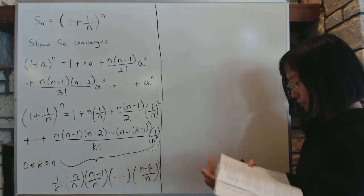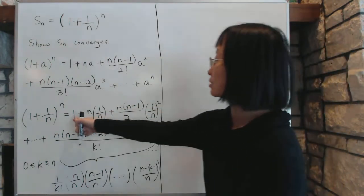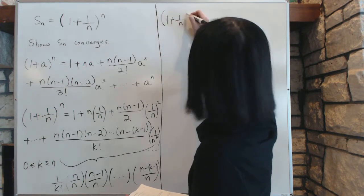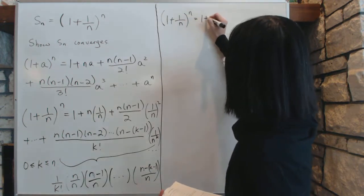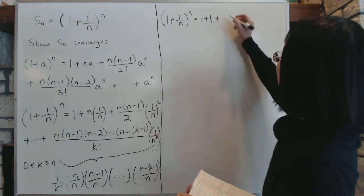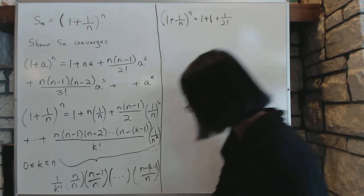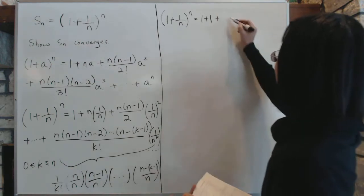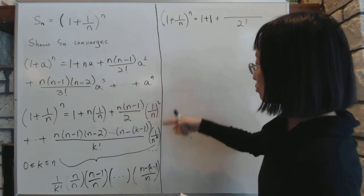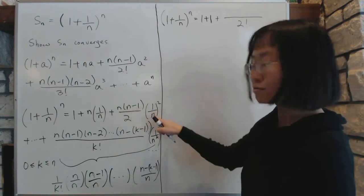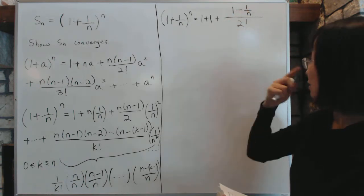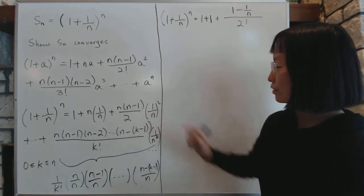This is the same expression rewritten in a more convenient form. We can write 1 plus 1 over n to the power n as: 1 plus 1, where the first two terms are just 1. Then we write 1 over 2 factorial as the denominator, with (n minus 1) over n as the numerator — which we rewrite as (1 minus 1 over n). So we have that term over that term, just written in a different way.